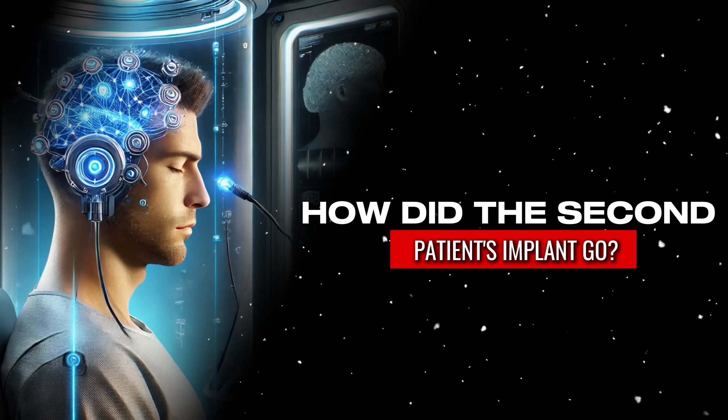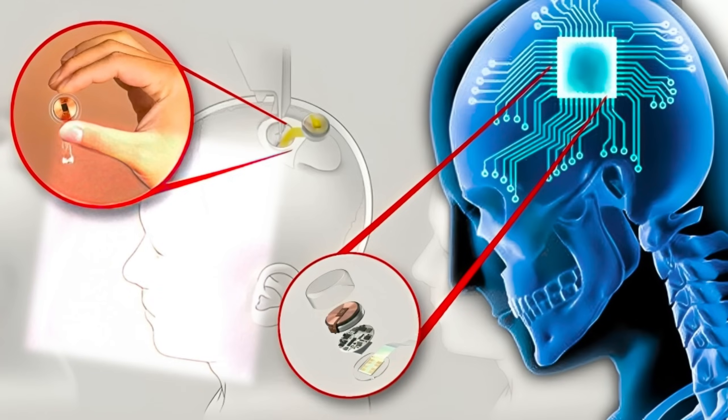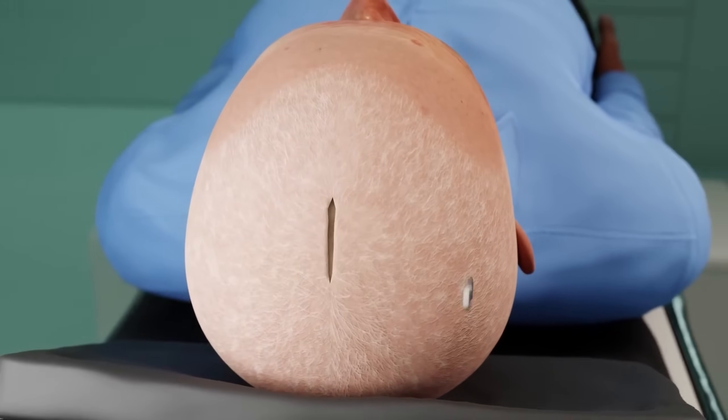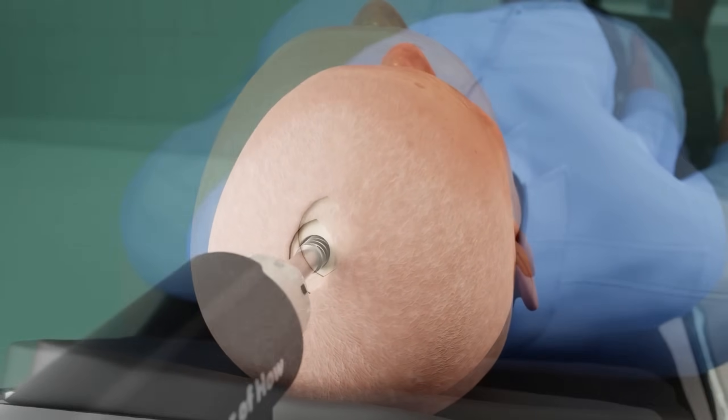How did the second patient's implant go? Actually, the new generation of implants has gotten better, but the way they put it in the brain hasn't changed much from the first patient. They did go deeper this time and used more threads, according to Dr. McDougall. The doctors start by cutting the skin on top of the head. They peel it back like you would open a car's hood.